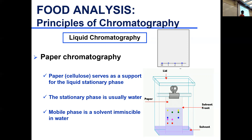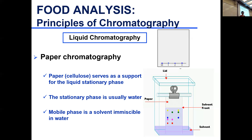With paper chromatography, the paper is made of cellulose and your stationary phase is liquid. You impregnate cellulose with water, so you have water as your stationary phase with cellulose as your solid support. Your mobile phase is a solvent that is immiscible with water — often something like hexane, an organic non-polar solvent.